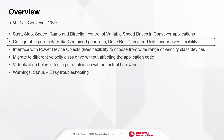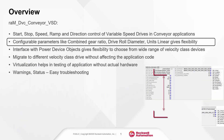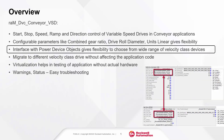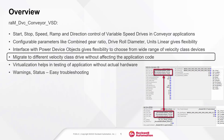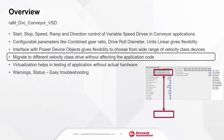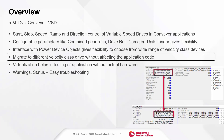The configurable parameters like combined gear ratio, drive roll diameter, units linear, and speed profile give flexibility to suit different application needs. The Convair object is interfaced with PowerDevice objects to connect to a wide range of velocity class devices, giving the freedom to migrate from one velocity class device to another without affecting the application code.